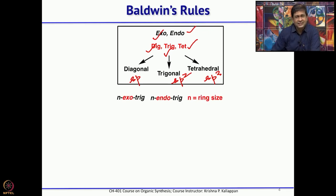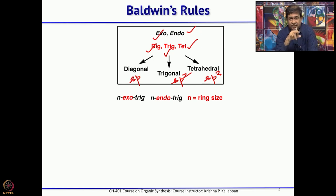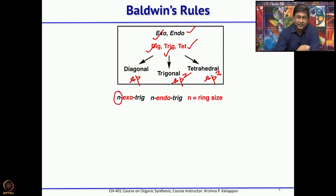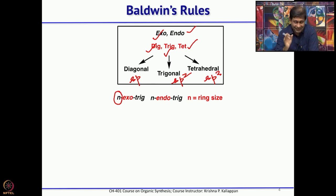The number in front of exo or endo represents the ring size formed during cyclization. If you are forming a 5-membered ring you write 5; a 6-membered ring you write 6; a 3-membered ring you write 3. So N represents the size of the ring formed after cyclization.